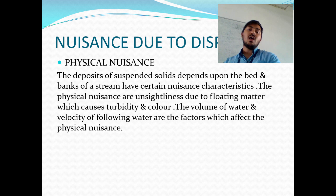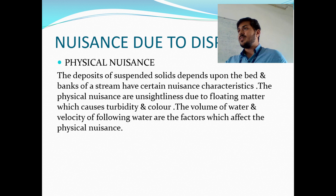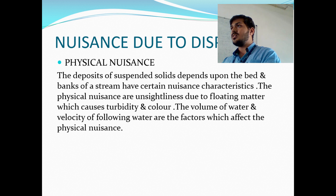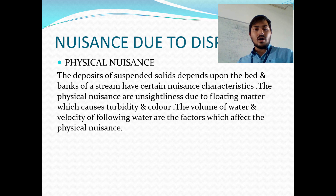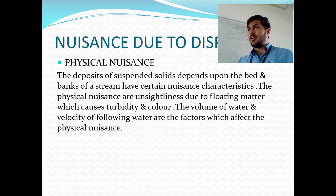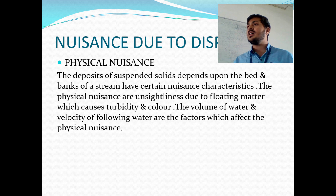There are three kinds of nuisance due to disposal: physical, chemical and biological. Physical nuisance refers to the deposits of suspended solids on the bed and banks of streams — for example, plastic or leaves. Any particles which settle on the top or bed of the water body are called physical nuisance. The volume of water and the velocity of water are the factors affecting physical nuisance, which also causes turbidity and colour in the water body.